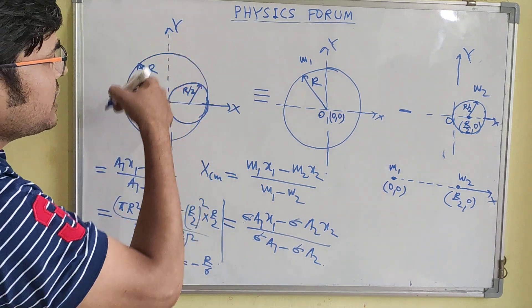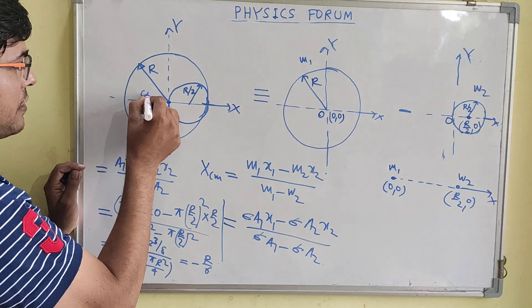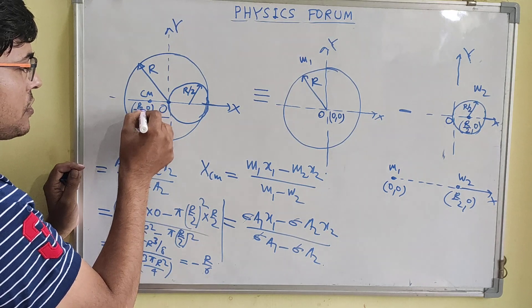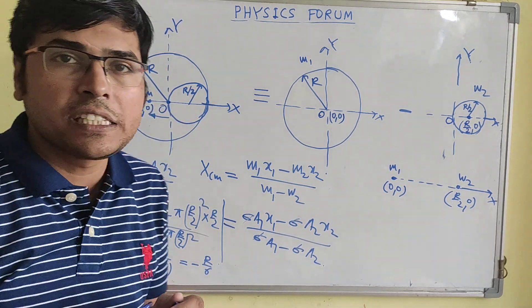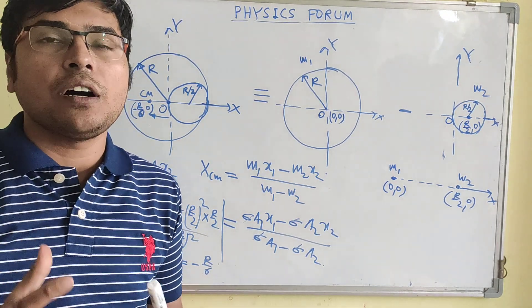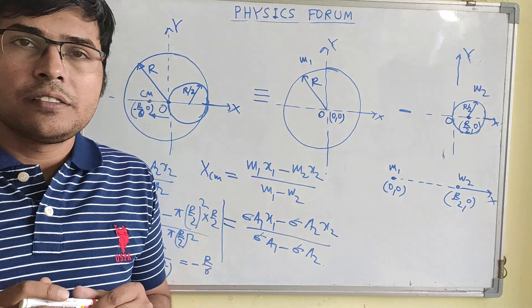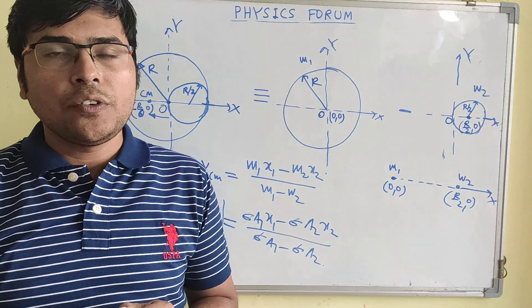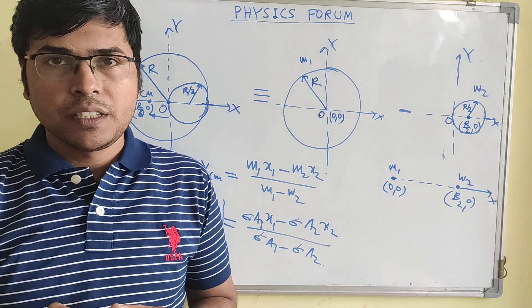So the center of mass of this remaining system would be at a coordinate of (−r/6, 0). This is how we use the concept of negative mass in the calculation of a continuous body in which a part of it is taken out. That's all for this video — I hope you liked it. Please subscribe to my channel and hit the bell icon. Thank you for watching.